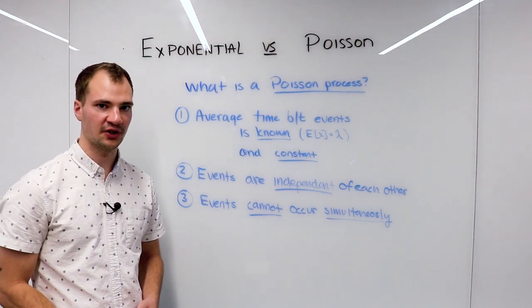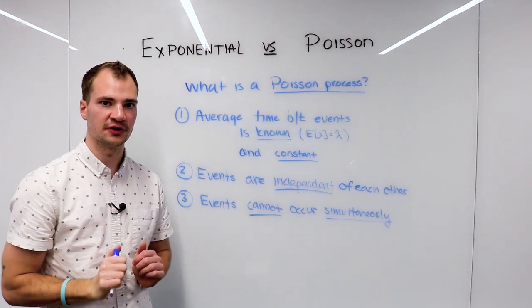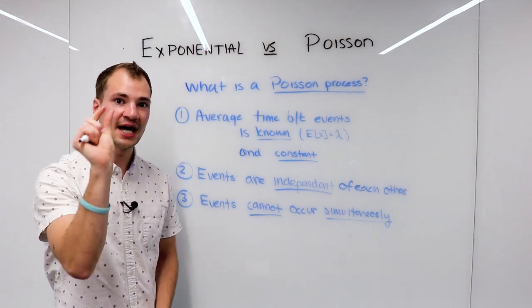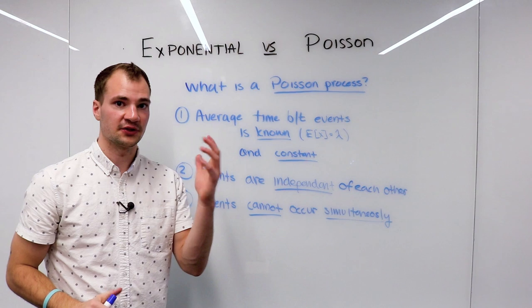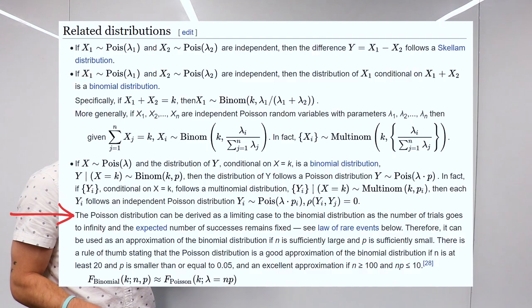Finally, by saying that events cannot occur simultaneously, we say that there has to be a time interval between events occurring. This allows us to think about that tiny time interval as a Bernoulli trial. In other words, within that interval, an event can either happen or not happen—it can be a success or a failure.